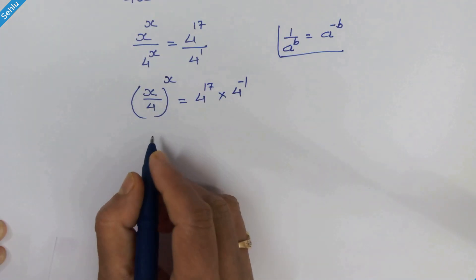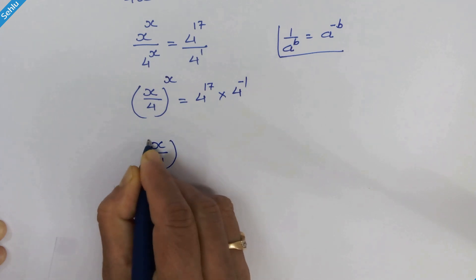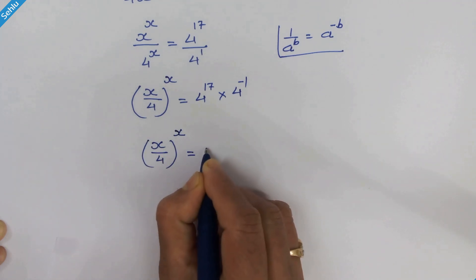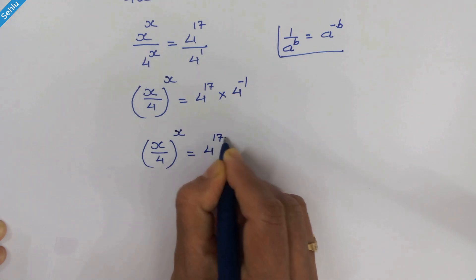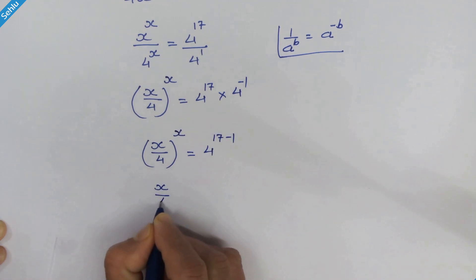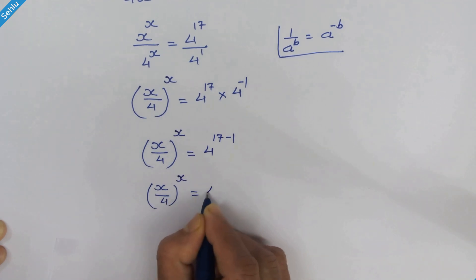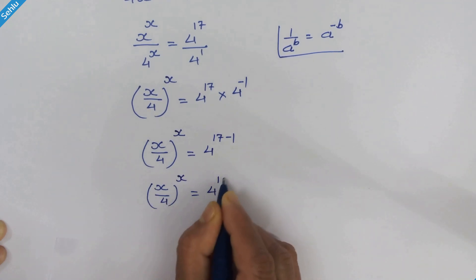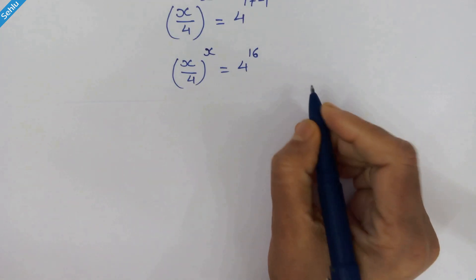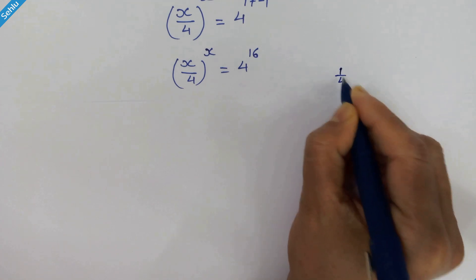In the next step we can write x upon 4 whole raised to x is equal to 4 raised to 17 minus 1, so it will be 4 raised to 16.